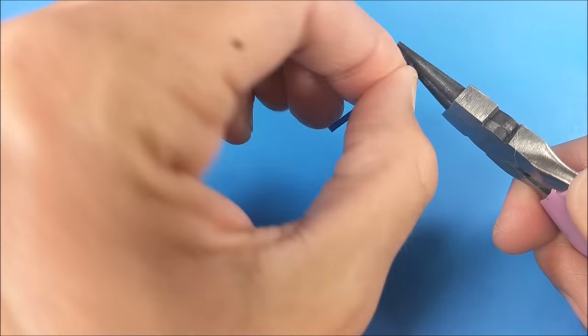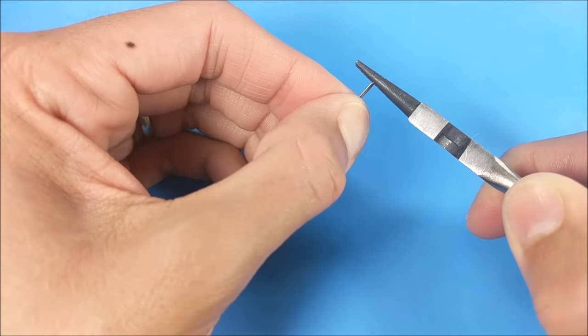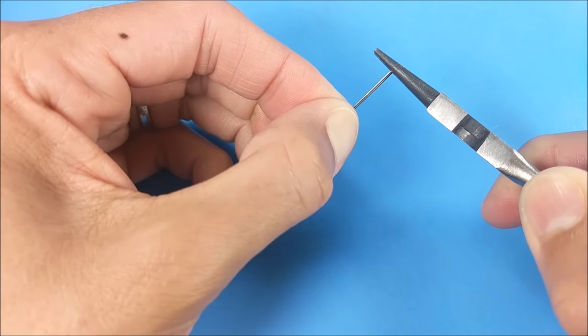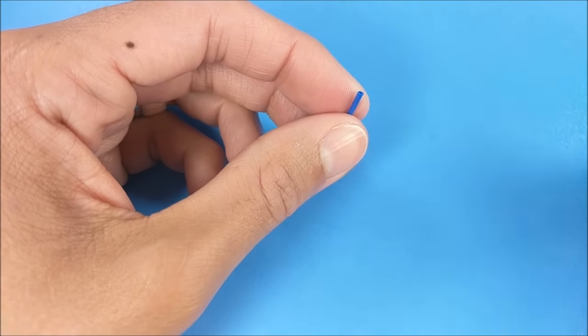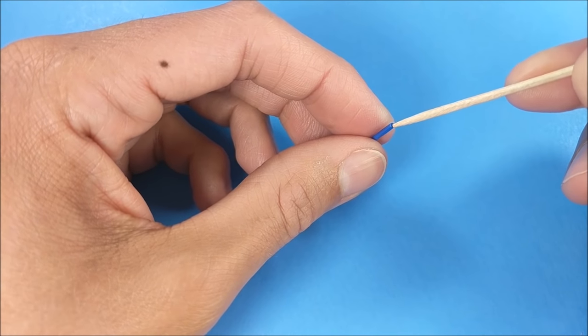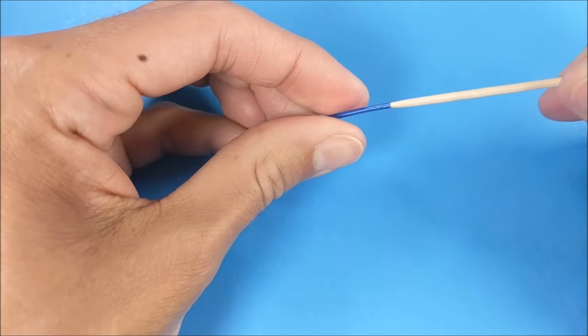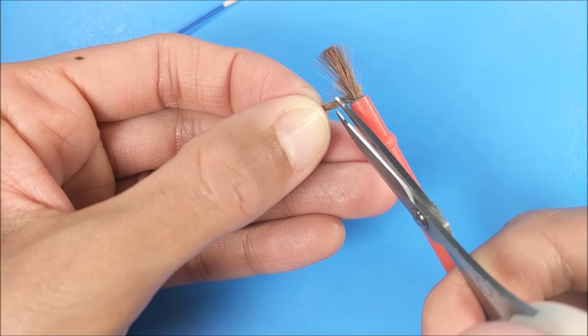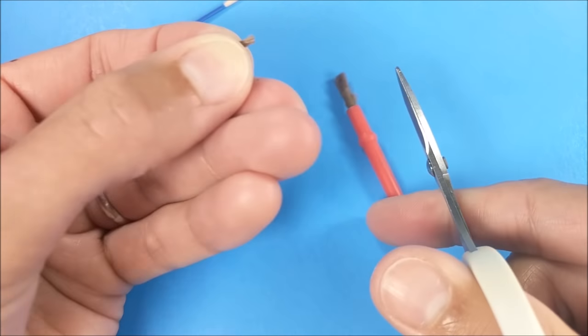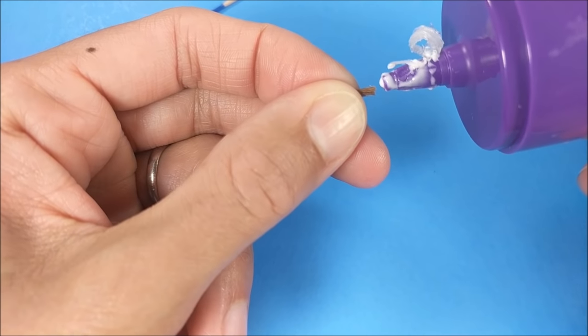Then I insert a toothpick to expand that section just a little bit. I cut off some fibers from an old paintbrush, glue one end, and kind of smash on that glue to make it a little bit more narrow.